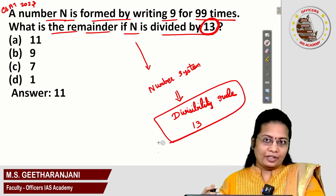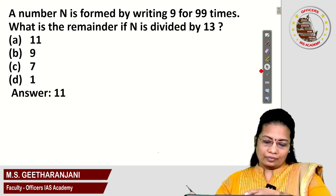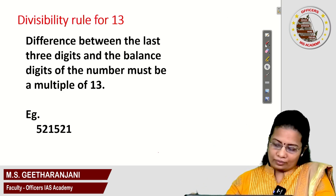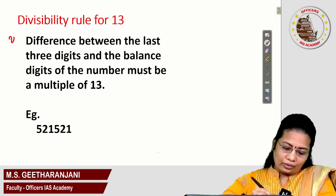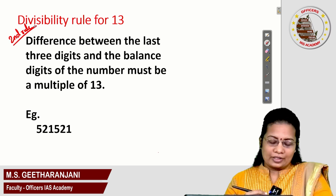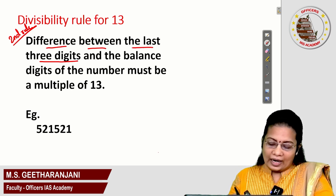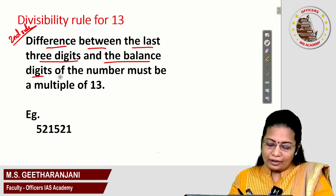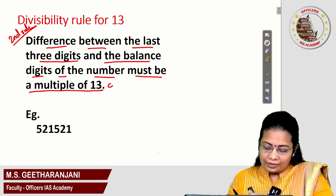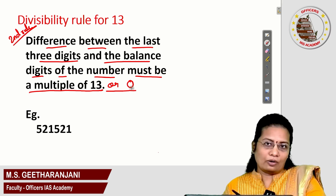Let us see what is the divisibility rule for 13. There are two rules for number 13. This is the second rule. Using the second rule, questions are often asked in the CZ paper itself. The rule is: the difference between the last three digits and the remaining digits of the number must be a multiple of 13 or 0.